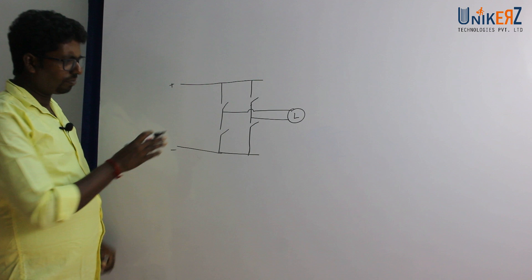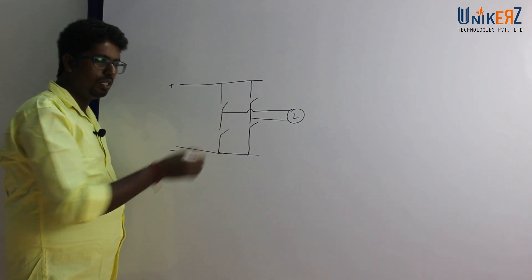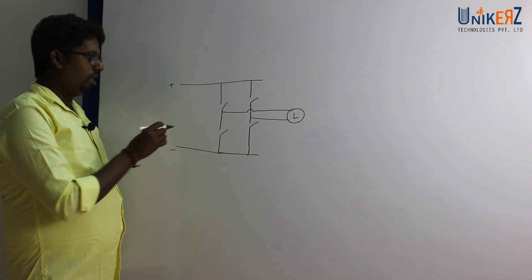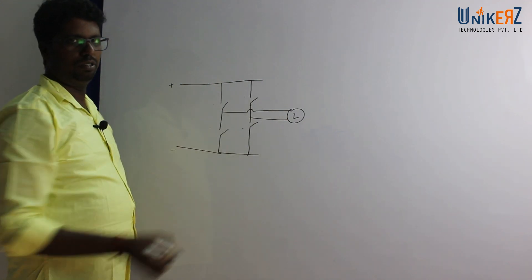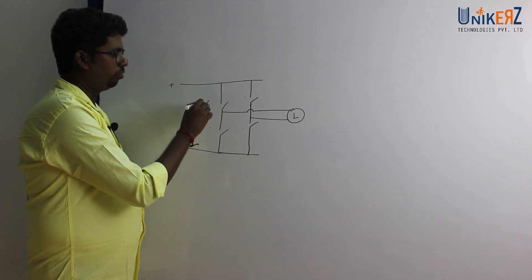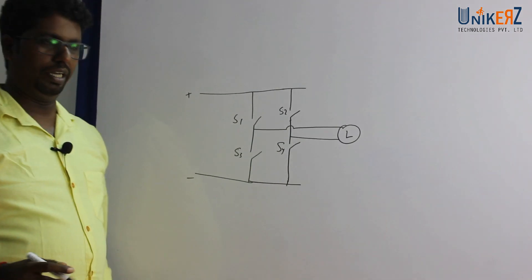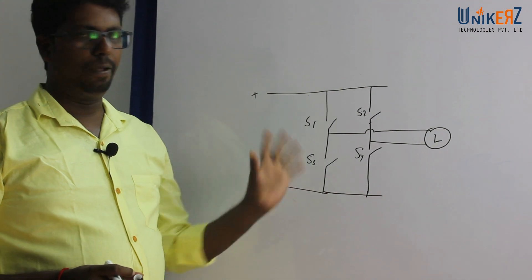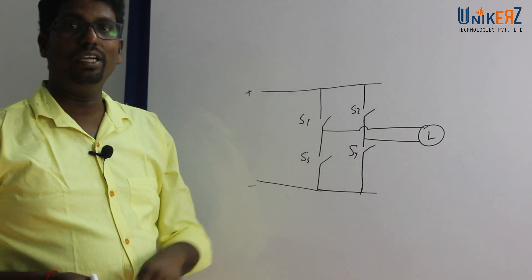To simplify this, this is the inverter arrangement using IGBTs. You can think of each IGBT as a switch. There are actually 6 switches. This is switch 1, switch 2, switch 3, switch 4. Using the S1, S4, S2, S3 combination of on-off switching, we are able to create DC again, and again we can create AC.